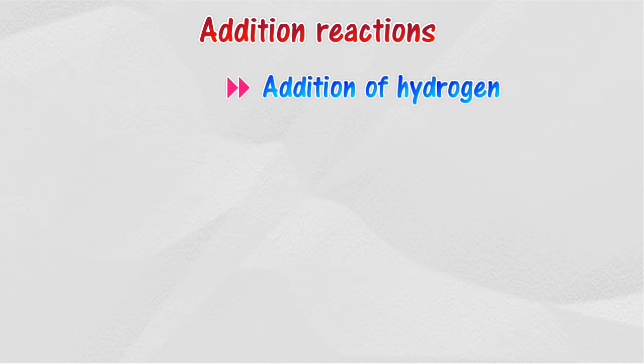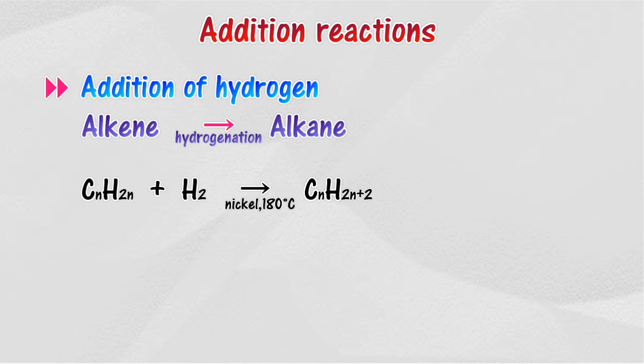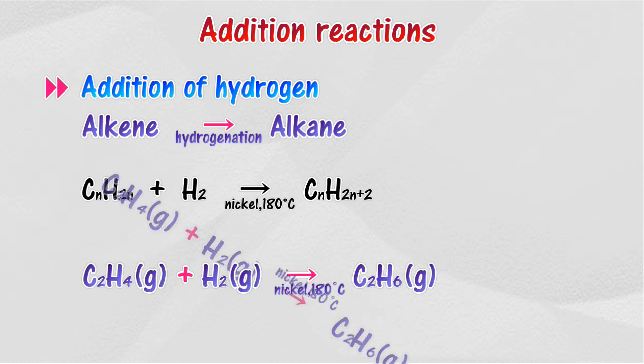Alkenes react with hydrogen to produce alkanes. The reaction occurs when a mixture of alkene gas and hydrogen gas is flowed over a catalyst that is heated to 180 degrees Celsius.